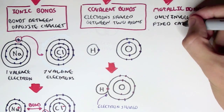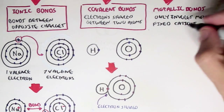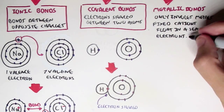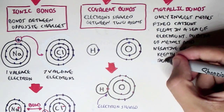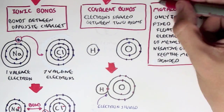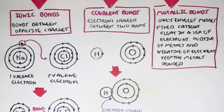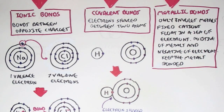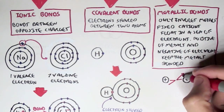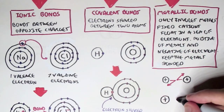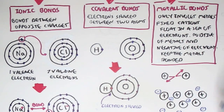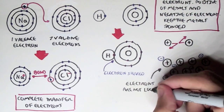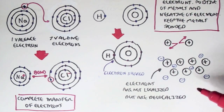Metallic bonds only involve metals. Here we have fixed cations — positively charged atoms — floating in a sea of electrons. The positive charges of metal cations and the negative electrons keep the metals bonded together. The key difference between metallic bonding and ionic bonding is that in metallic bonding, the electrons are not localized but are delocalized, moving freely between the cations.